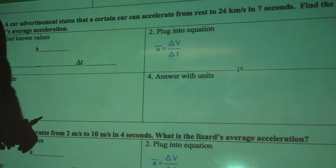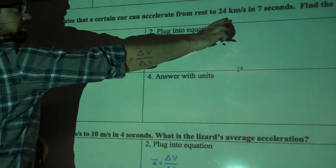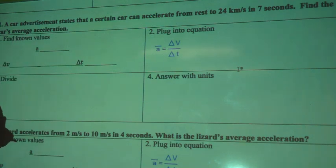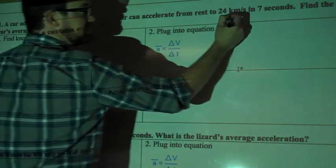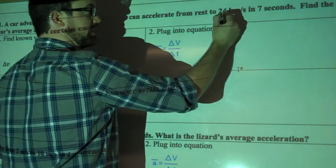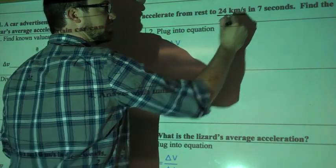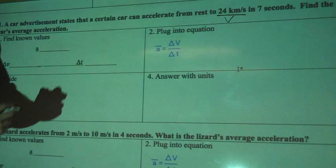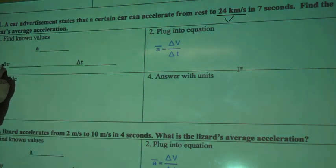So we know that it accelerates from rest to 24 kilometers per second. So that's going from 0 to 24. And because it's kilometers per second, or what we looked at earlier, meters per second, this is going to be our velocity. If I go down here to change in velocity, I know that this car is going for, and I'm going to write this down here,